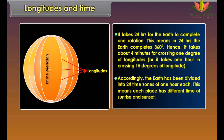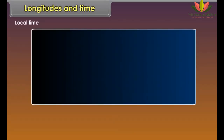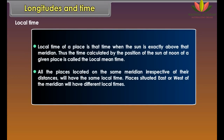Longitudes and Time. Longitudes help us to calculate time. Time is measured by the movement of the earth. The earth moves on its axis from west to east — this is called rotation. It takes 24 hours for the earth to complete one rotation, meaning in 24 hours the earth completes 360 degrees. Hence, it takes about 4 minutes for crossing 1 degree of longitude, or 1 hour in crossing 15 degrees of longitude. Accordingly, the earth has been divided into 24 time zones of 1 hour each.